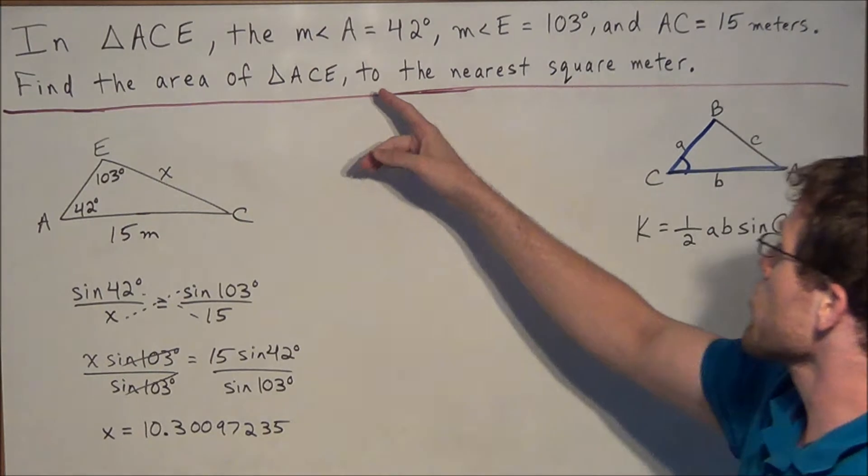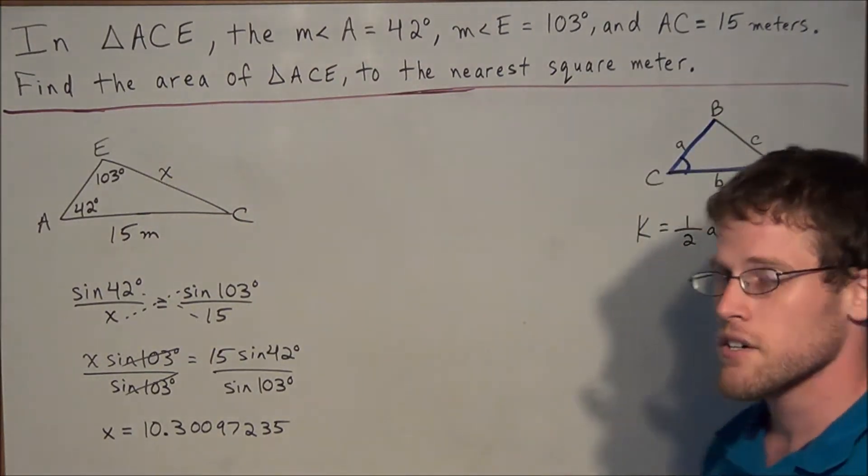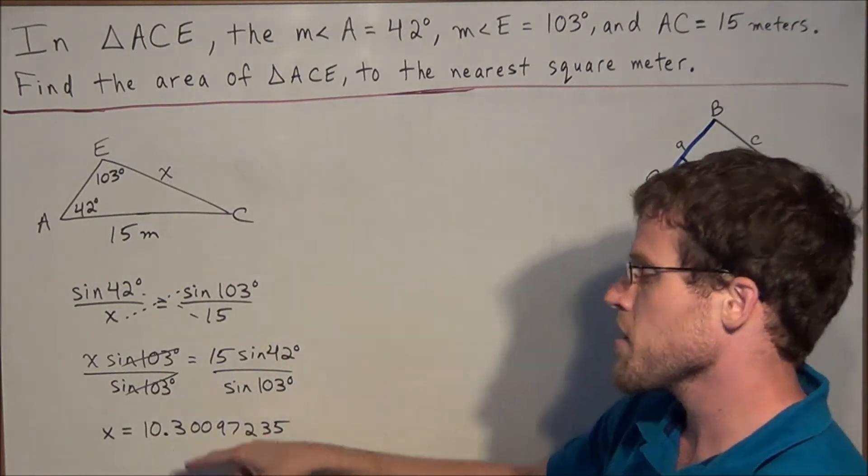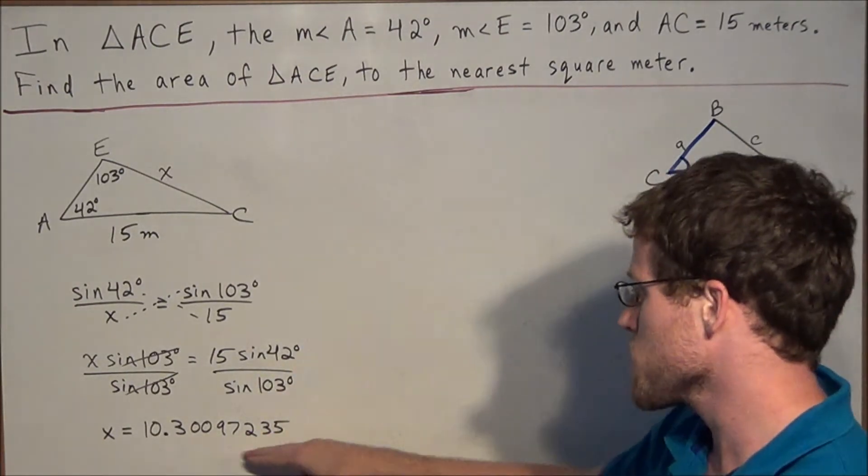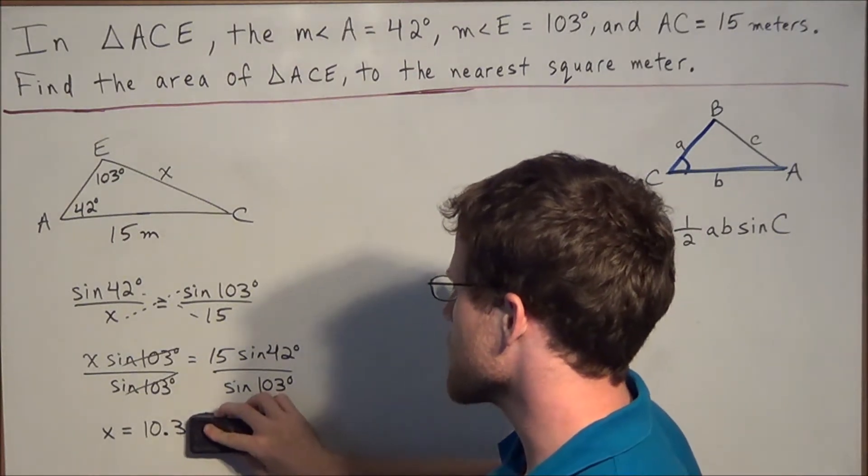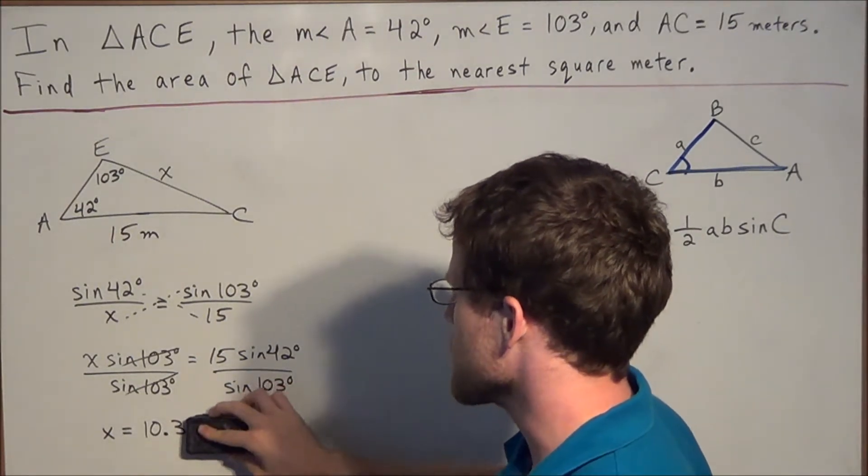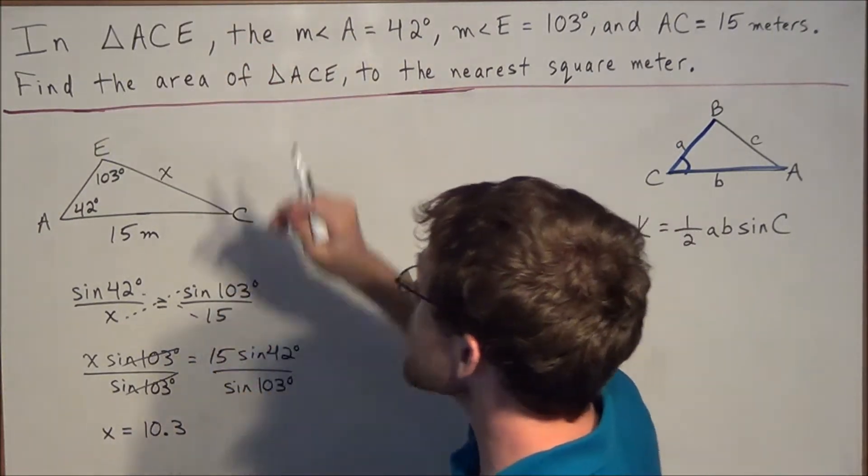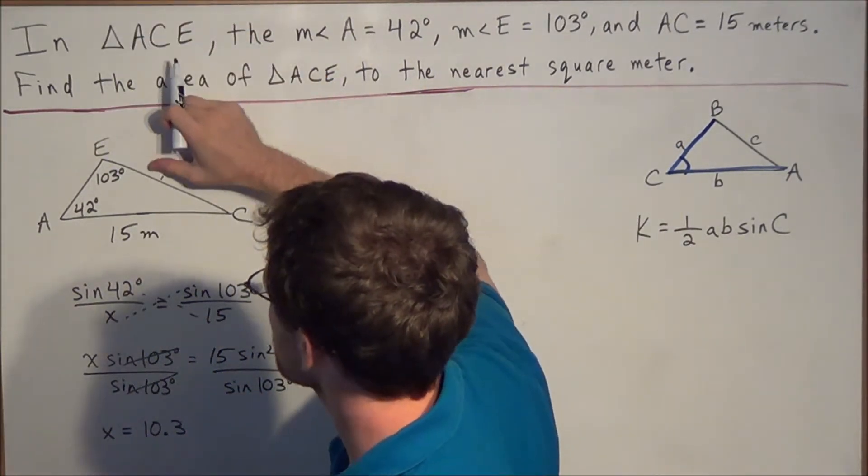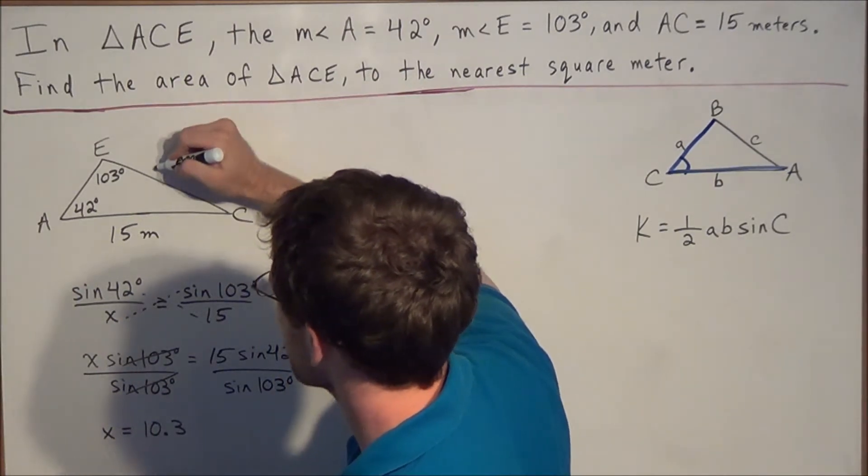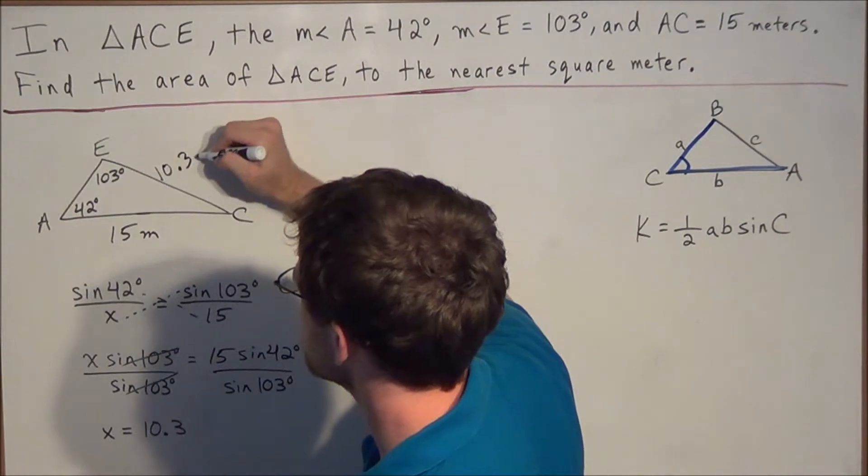But since this problem, we're rounding to the nearest square meter, what we could do is round this side length here to the nearest tenth. We're not going to need all these extra decimals, but 10.3 should be sufficient. So we're just going to erase everything else. We could round to the nearest tenth for this part of the problem. So instead of x, now we could replace x with 10.3. And remember, the units we're using for now is meters. So we have 10.3 meters.